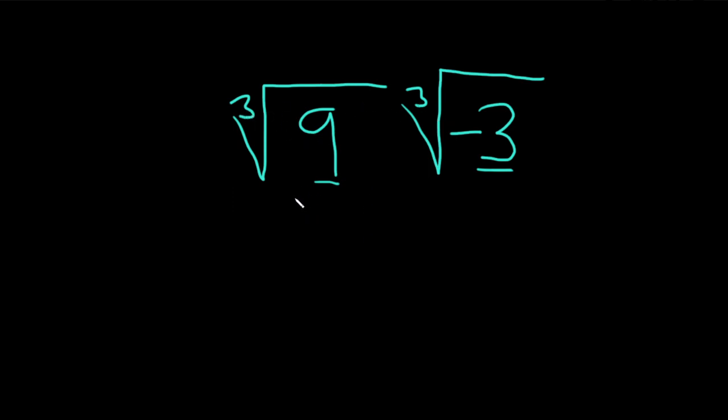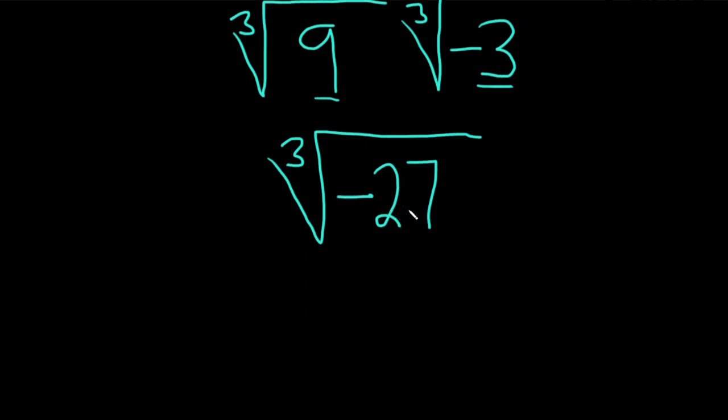So that allows us to make that step. So 9 times negative 3 is negative 27. So this is the cube root of negative 27. And so now we just need to clean this up. What is this going to be?